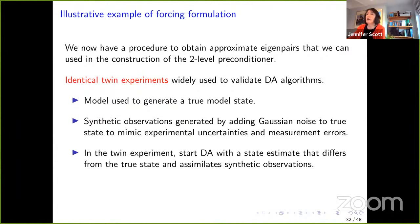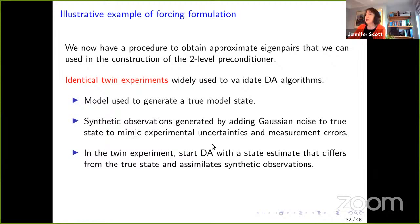Let's look at how this works in practice with an example using the forcing formulation and a two-level preconditioner. We use identical twin experiments, which is widely done in data assimilation to evaluate algorithms. The model is used to generate a true state, then Gaussian noise is added to generate synthetic observations mimicking experimental uncertainties and measurement errors. We start the data assimilation with a state estimate that differs from the true state and assimilate the synthetic observations — a way to generate test cases at a manageable scale.